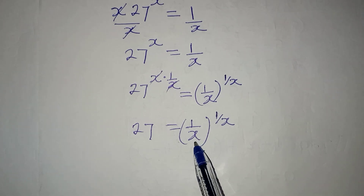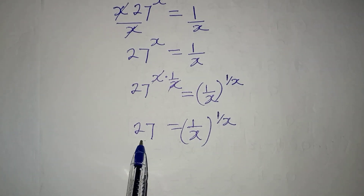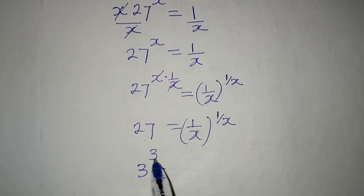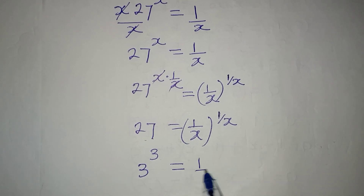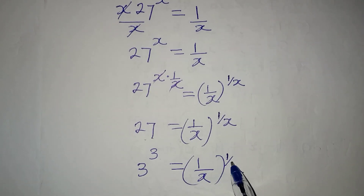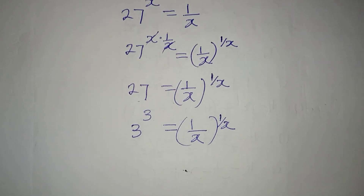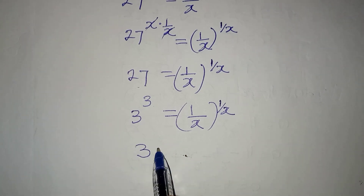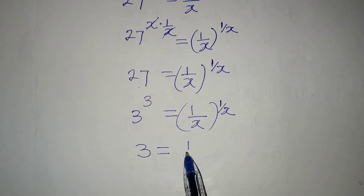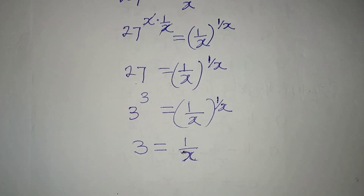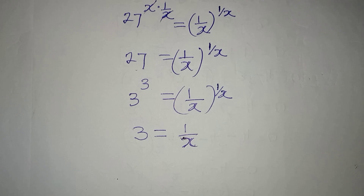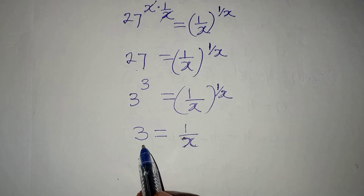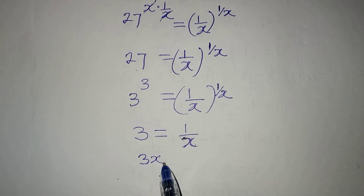On the right-hand side, the power becomes the base. On the left-hand side, I can write 27 in index form as 3 to the power of 3, so this will now be equal to 1 over x to the power of 1 over x. If you compare the powers, you will see that 3 is equal to 1 over x, and if you also compare the bases, you will see that 3 is also equal to 1 over x.